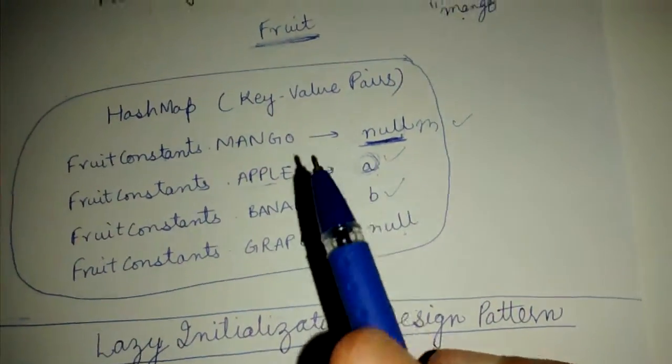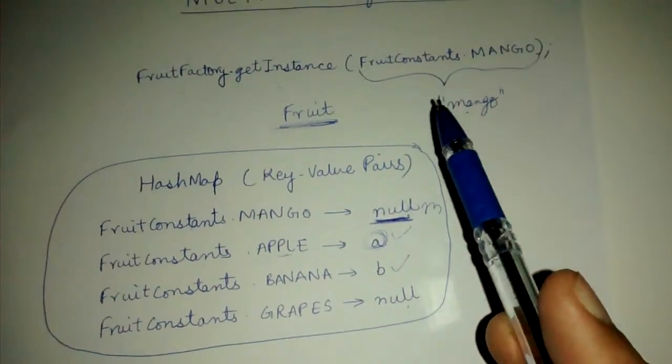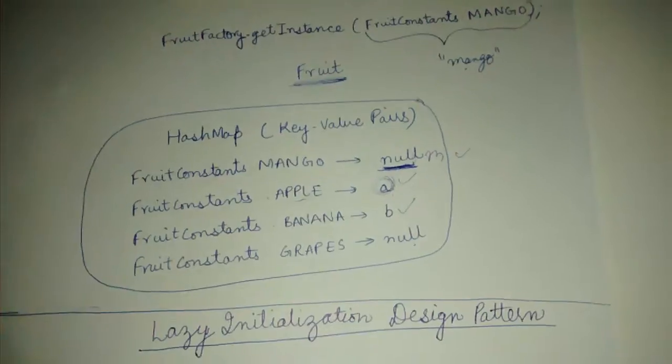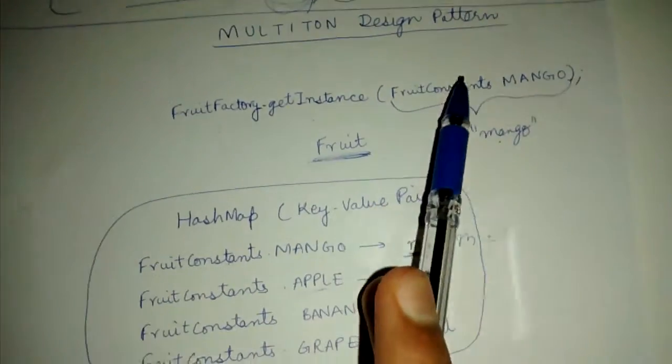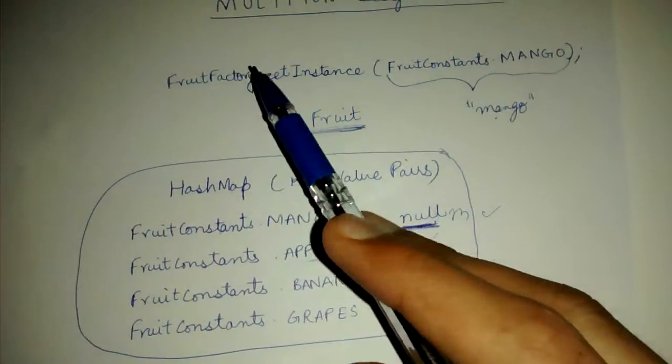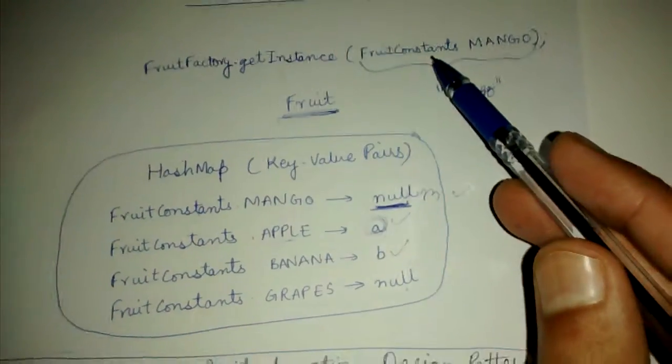Let's say we are making some fruit objects. As we discussed in the last time's multi-ton design pattern, we used a fruit factory to get the instances of some fruits.